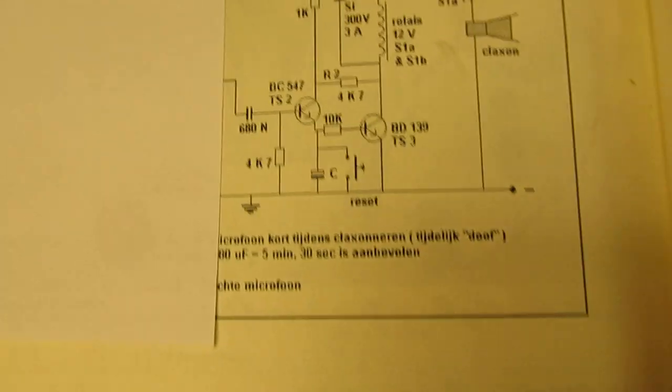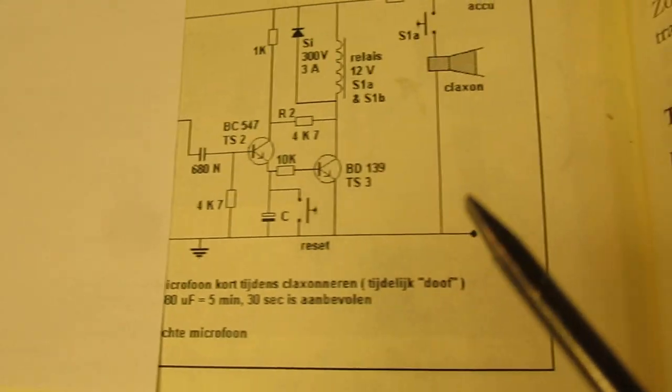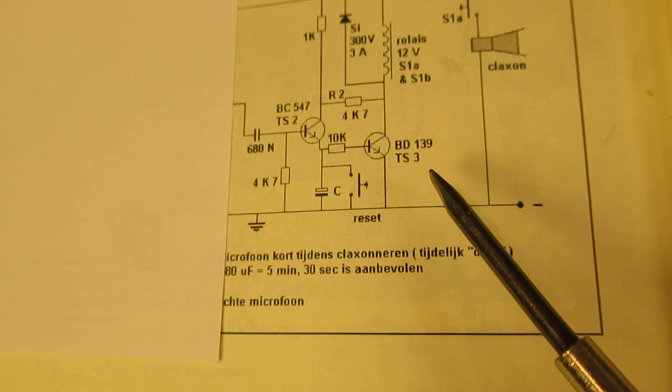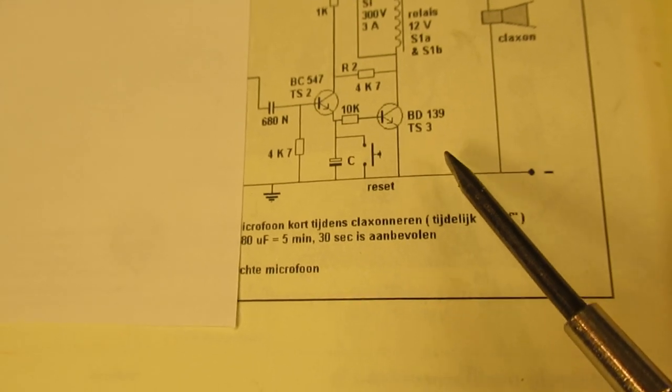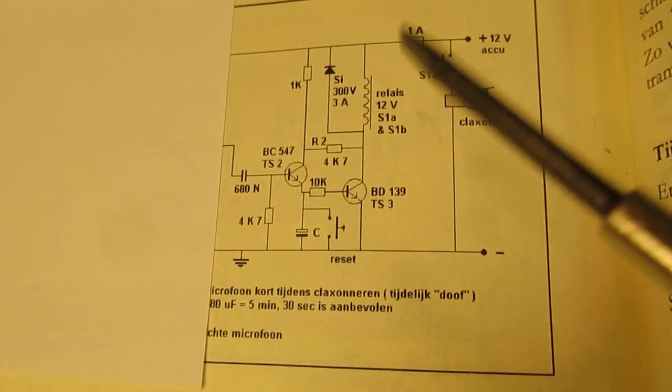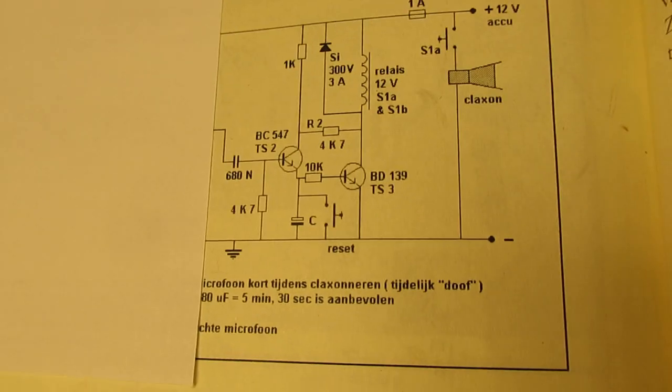So perhaps to show it better. This is in my case not a BD139 but a BC547B because of the high ohms resistance of the relay.